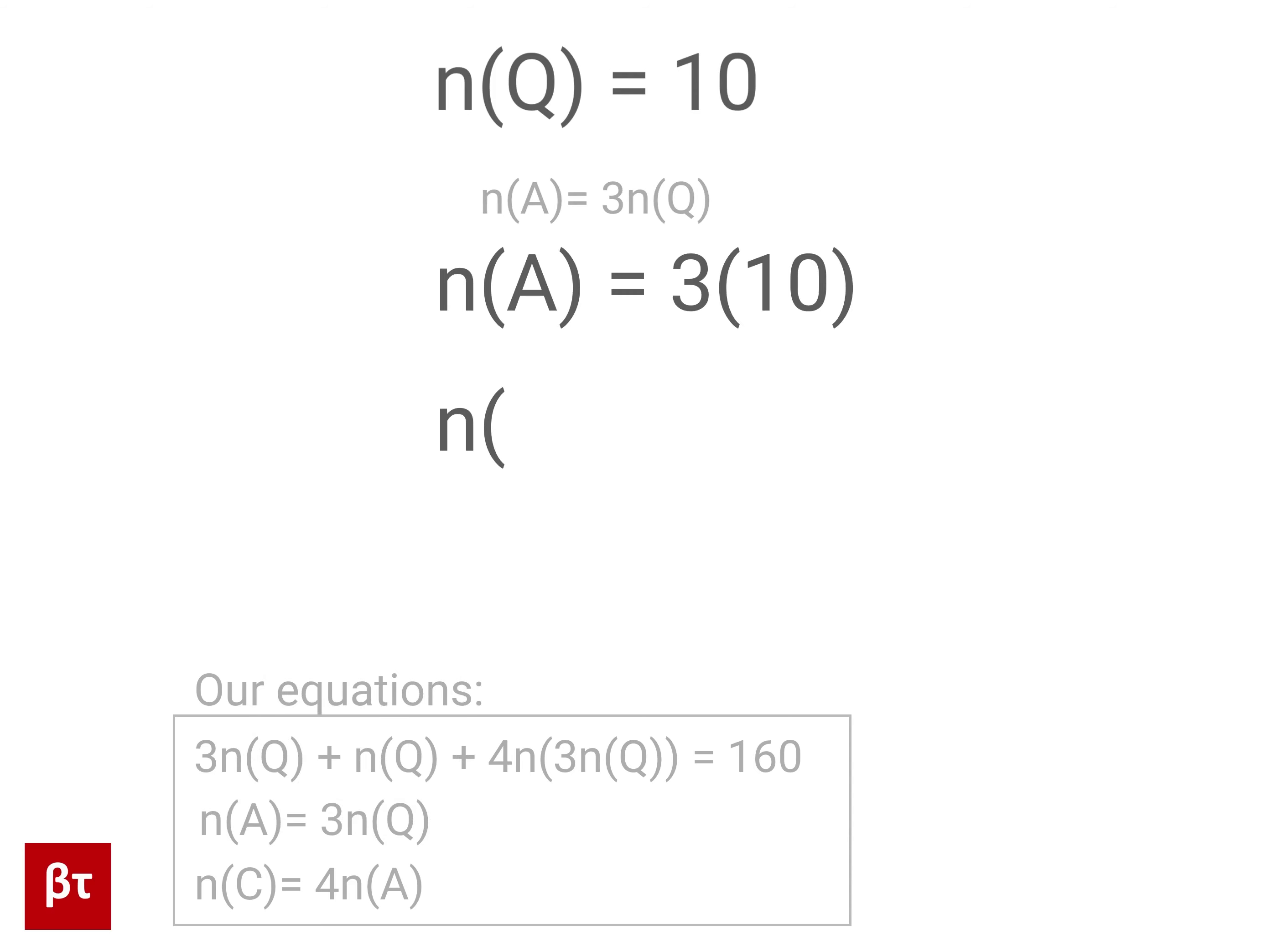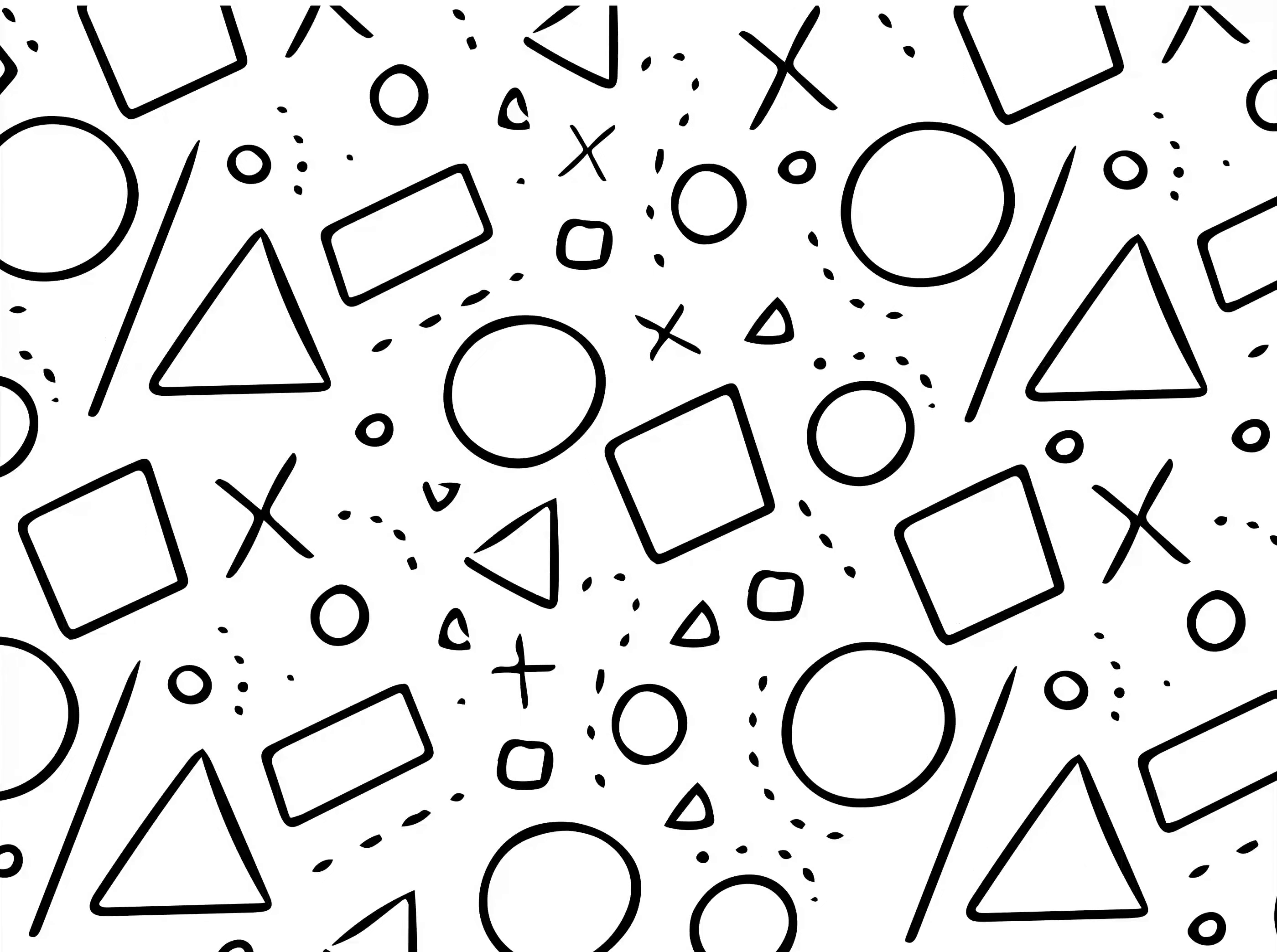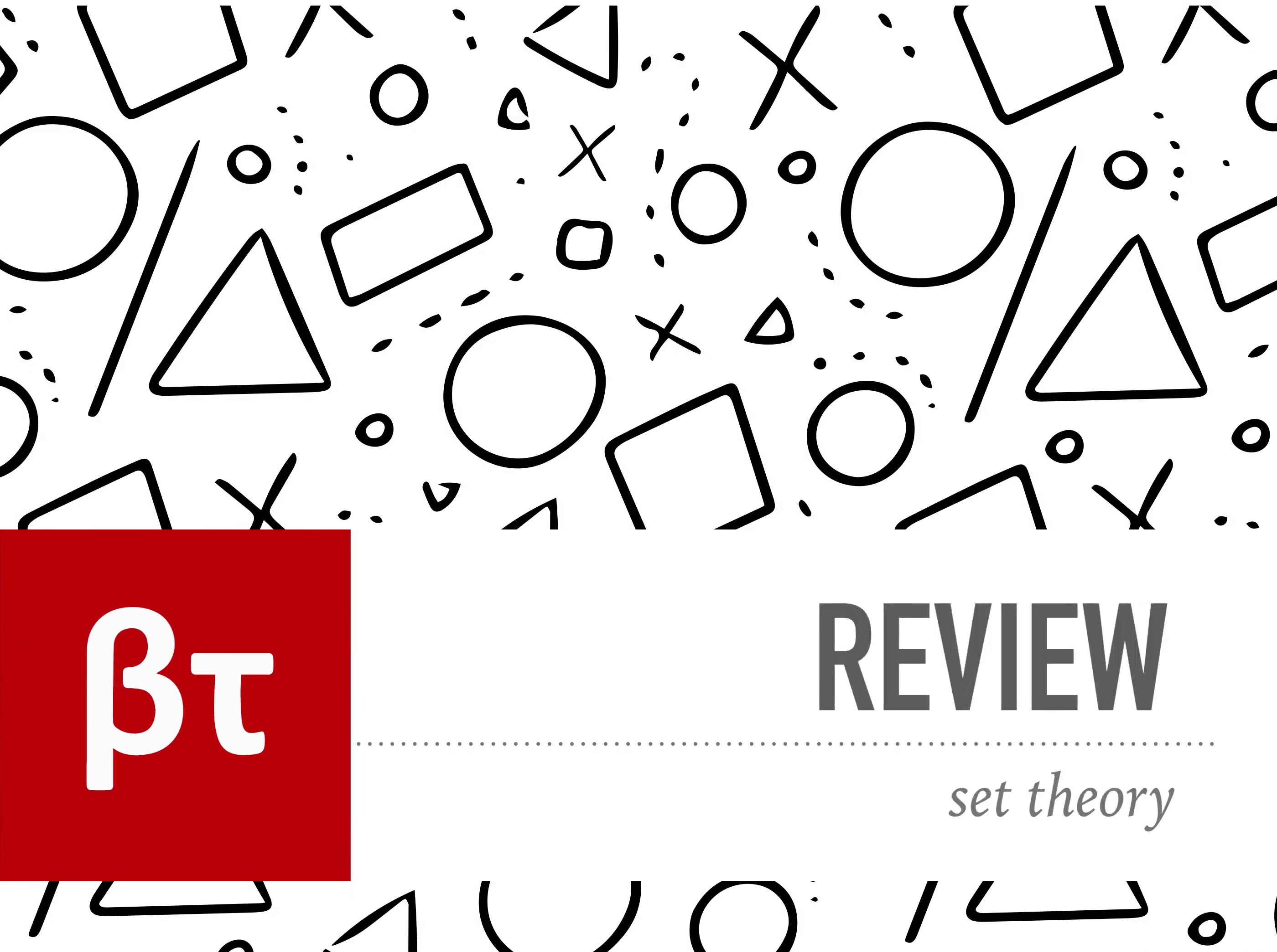So there you have it. 30 amethyst geodes were sold last year. This was a pretty simple problem, but its main purpose was to help you think in terms of sets and their sizes, as well as the concepts of subsets, disjoint sets, partitions, and other ways that sets can relate to one another.